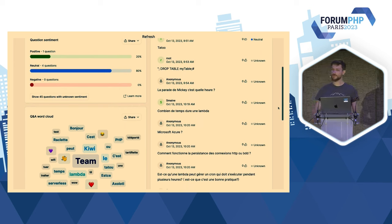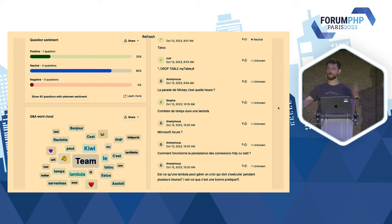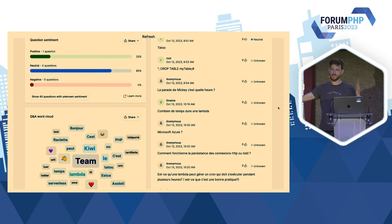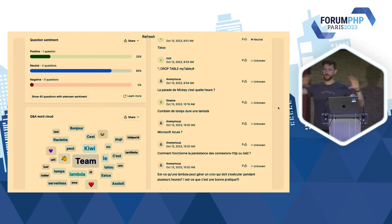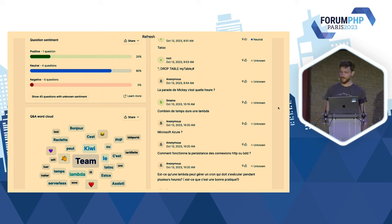Combien de temps dure une Lambda ? On peut exécuter du code jusqu'à 15 minutes par invocation. Donc si vous avez des très longs jobs qui prennent vraiment longtemps, ça ne marchera pas plus de 15 minutes. En général, on recommande de splitter. Quand je dis 15 minutes, c'est le temps d'exécution d'une barre bleue — les conteneurs peuvent rester vivants très très longtemps. Merci beaucoup.